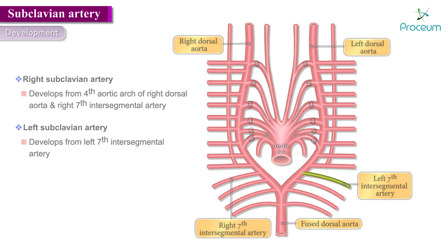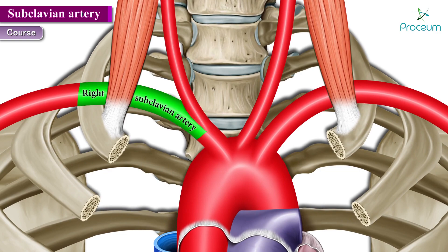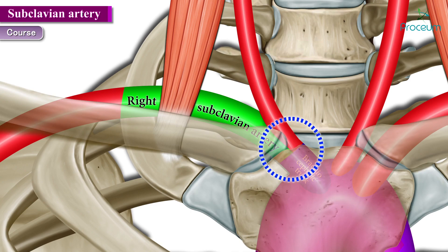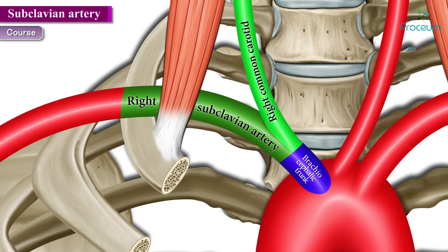Now let us discuss the course, starting with the right subclavian artery. The right subclavian artery originates from the brachiocephalic trunk. We can see the arch of the aorta giving off the brachiocephalic trunk, which lies behind the upper border of the right sternoclavicular joint. This brachiocephalic trunk gives off two important arteries: the right subclavian artery and the right common carotid artery.